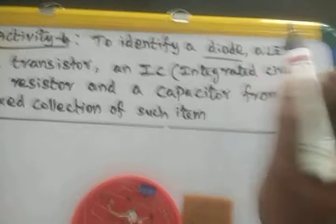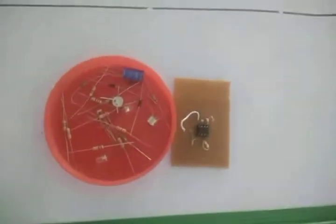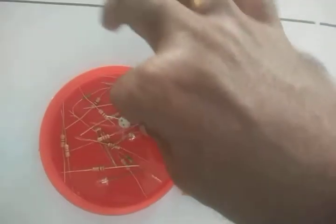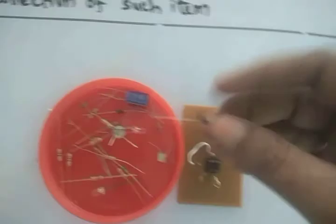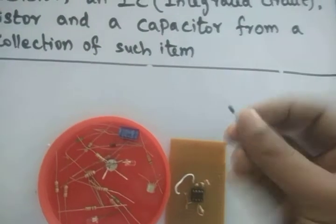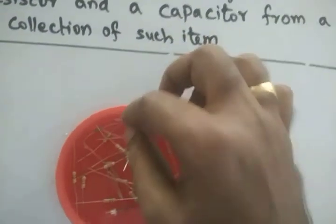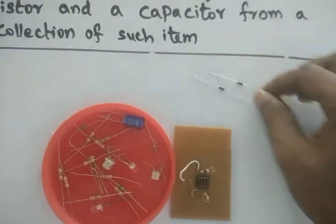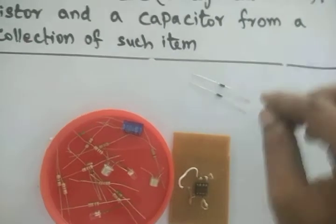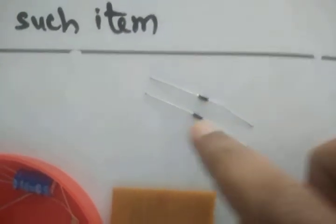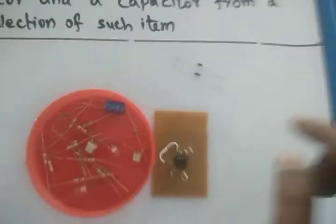Diode. The semiconductor diode — the PN junction diode — is black in color. So this is the diode. These two are PN junction diodes, both black in color. There is a line given on one end: that side is the P type, and the side without a line is the N type.